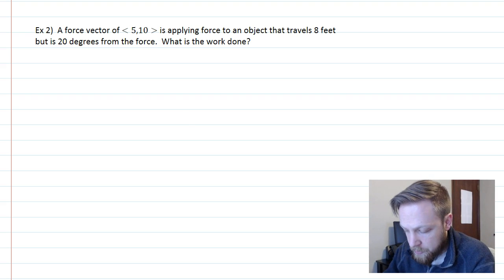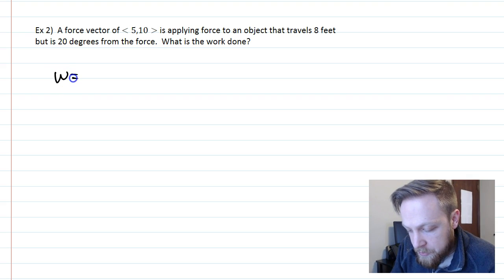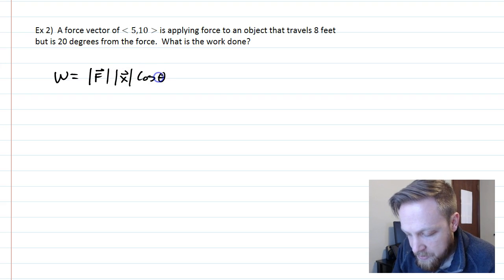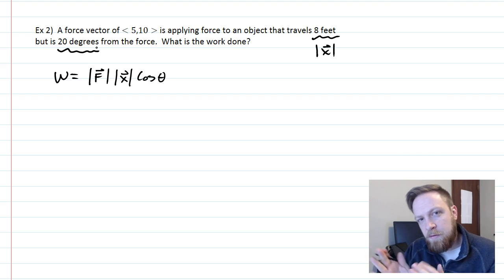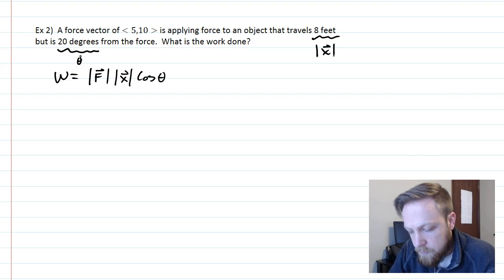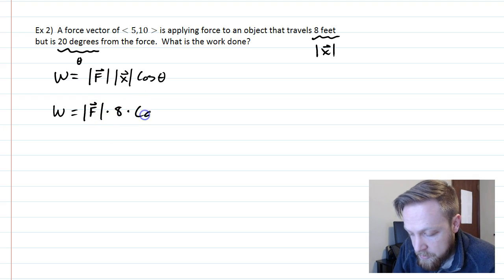This is another example of work but we're gonna end up using the other formula. Before we used the dot product of force and movement, this is going to be the magnitude of our force, the magnitude of our direction, cosine of theta. The reason I know this is because already the object is traveling eight feet, that is the actual magnitude of the traveling, and then we have the movement 20 degrees of the force, so we have our theta. So the work here is going to be the magnitude of the force, which I don't know yet, but the magnitude of x is 8 and then the angle is 20.